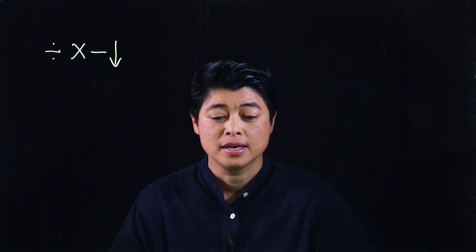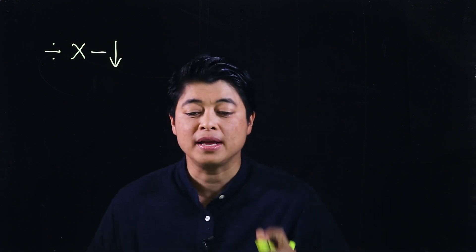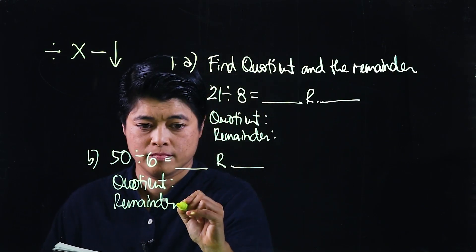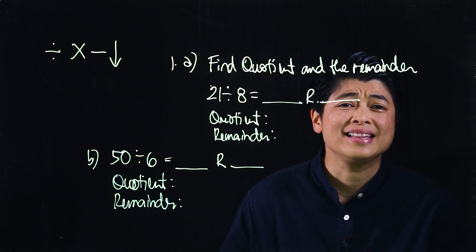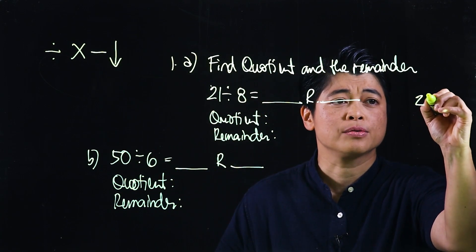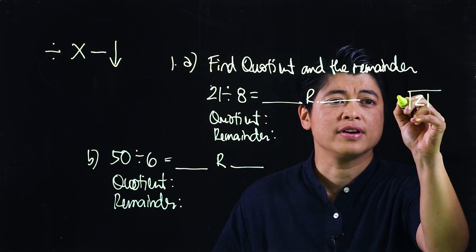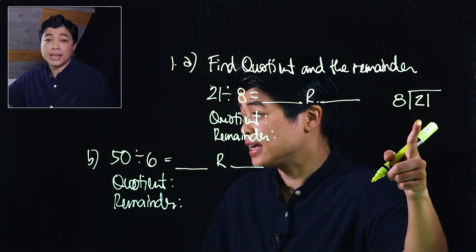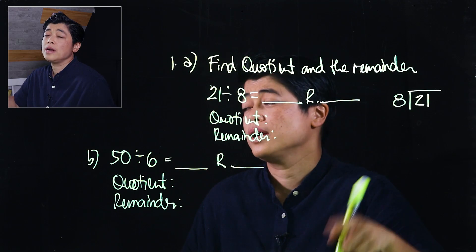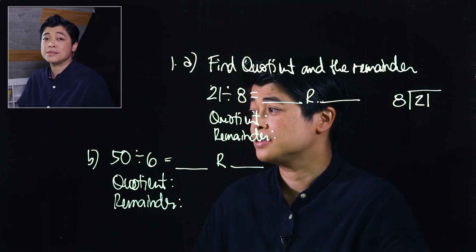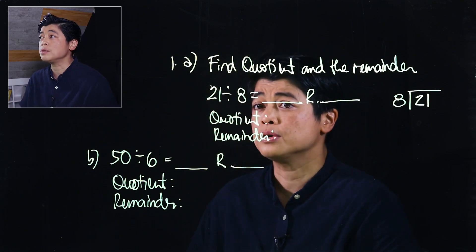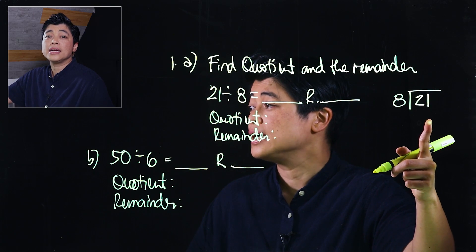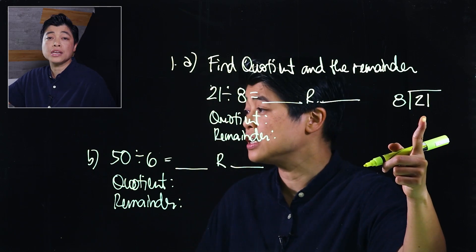We will begin with the easy lesson, which is Lesson 1. The exercises come from page 134 and I've selected two problems. When we divide, we start with 21 divided by 8. In this exercise it's set up already for the kids, but in the workbook there's barely any setup, so kids really need to know how to write it down in computational division.